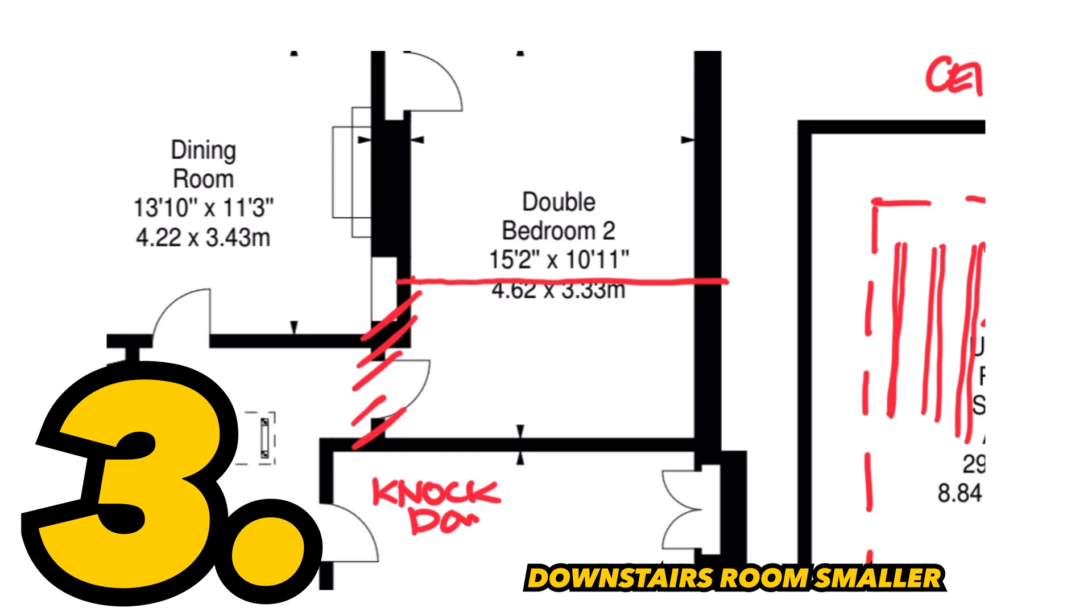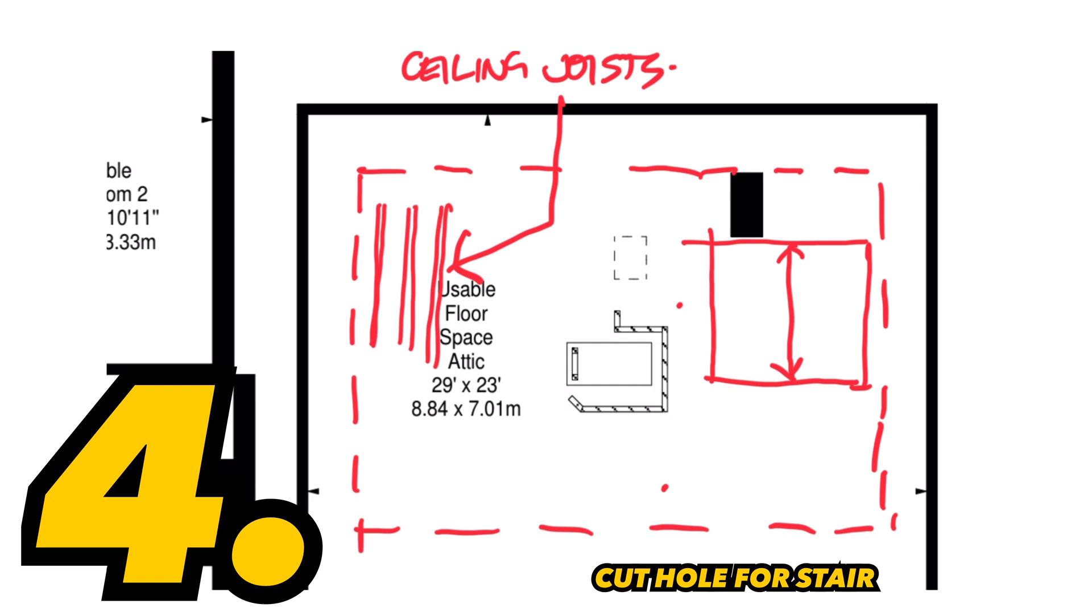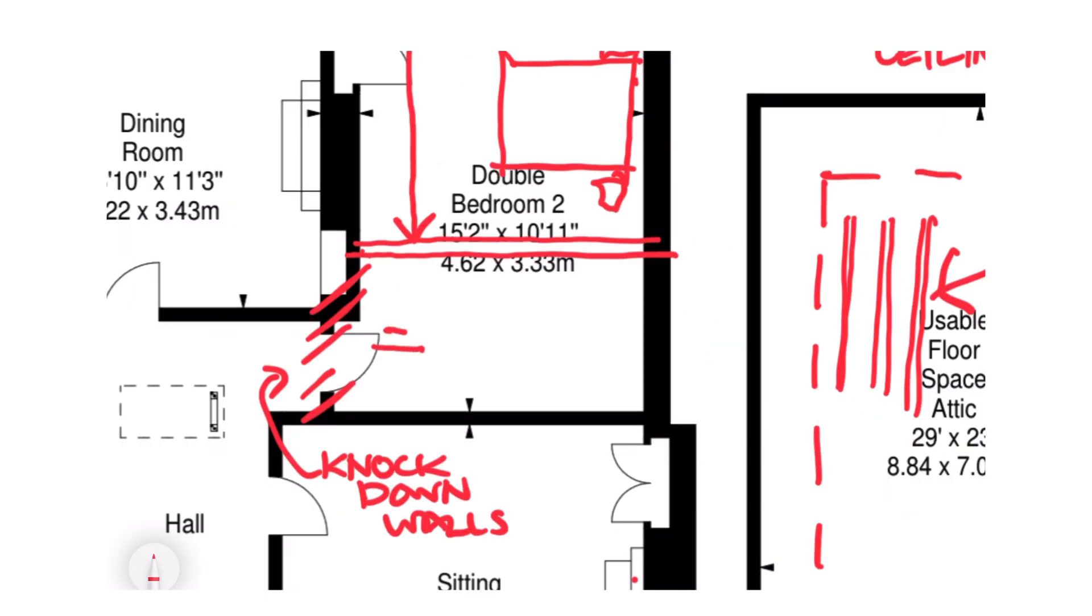Number three, making a downstairs room smaller by taking down a wall, then cutting a hole in the ceiling and adding trimmer beams to make an opening for a stair, then adding a new staircase.